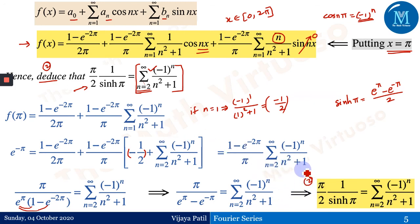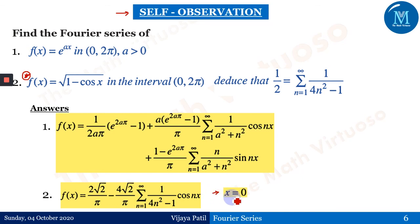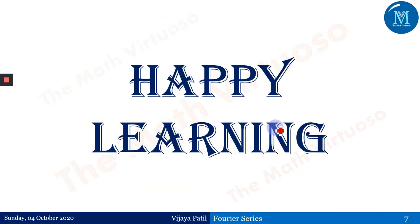This is very straightforward provided you understand Fourier series from the beginning. There is also a self-observation slide with two examples: f(x) = e^(ax) on [0, 2π] and another function — these are important for understanding, and answers are provided. Try to understand why a specific x value is chosen in each deduction. Thank you, happy learning.